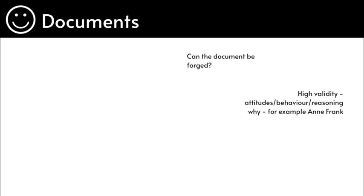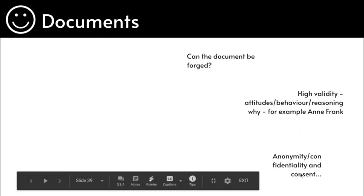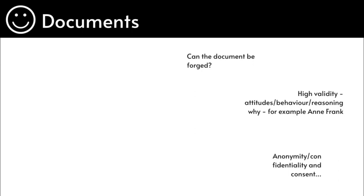These are things you might have learnt within history GCSE or Key Stage 3, so it's good to reference Anne Frank's diary because it was a document with high validity. Anonymity — and that should be confidentiality — as well as consent are important considerations. You need a lot of consent before you actually use a document, otherwise it'll be unethical, and funding bodies will not be able to give you funding.